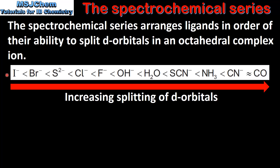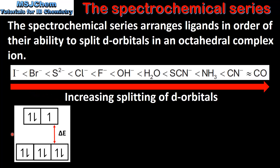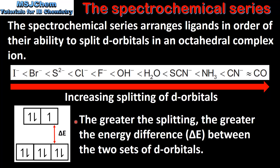Here we can see the spectrochemical series which can be found in section 15 of the data booklet. As we go from left to right we have increasing splitting of d orbitals. In a previous video we saw that when ligands bond to a central metal ion the d orbitals split into two sets. In an octahedral complex ion we have 2 d orbitals of higher energy and 3 d orbitals of lower energy. So the greater the splitting, the greater the energy difference between the two sets of d orbitals.